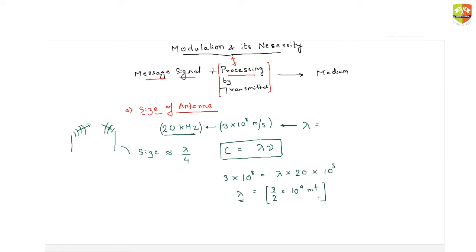Since the antenna size must be λ/4, an antenna of roughly 15 kilometers becomes completely impractical. Therefore you need to process the signal — you cannot just transmit it directly. The processing needs to increase the frequency, because if frequency increases, lambda decreases (since λ × f = c). That is why we process the signal — to reduce the required antenna size.